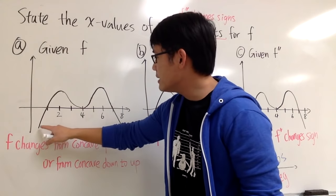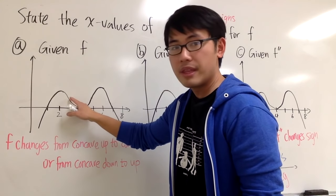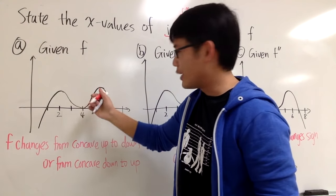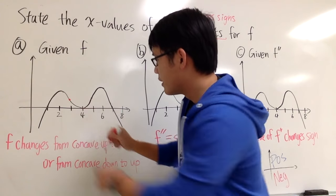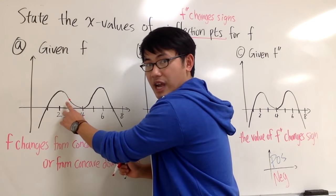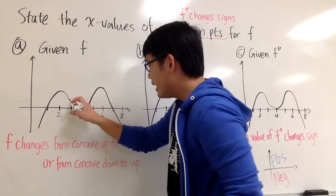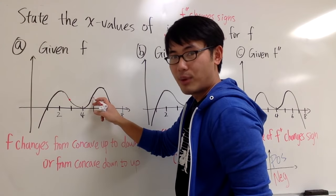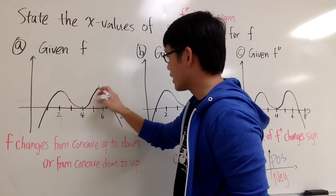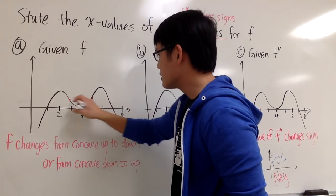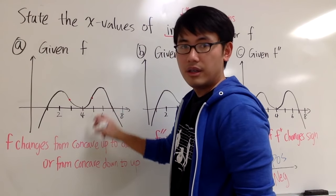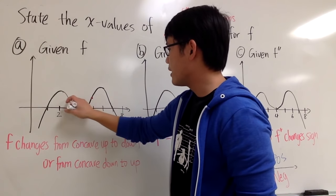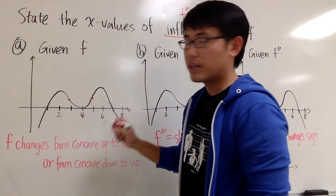As you can see, this part right here is concave down up to this point. From here to here it's concave down. Then from here to here it's concave up. And then once again after this point it becomes concave down again. So we have two inflection points, here and here.